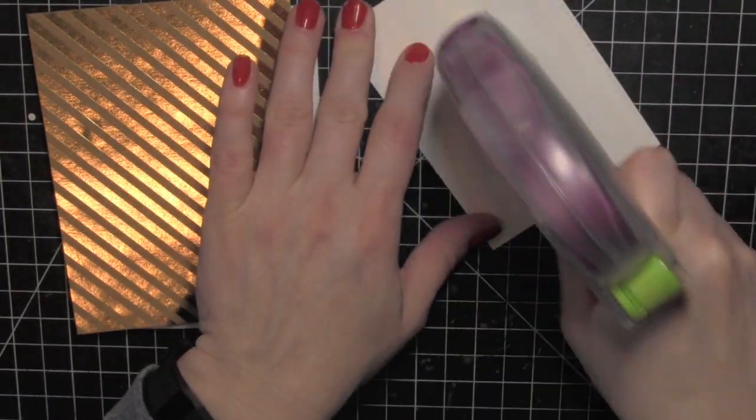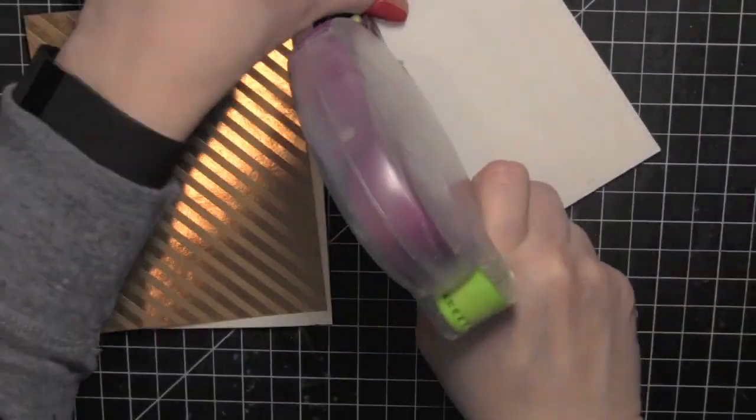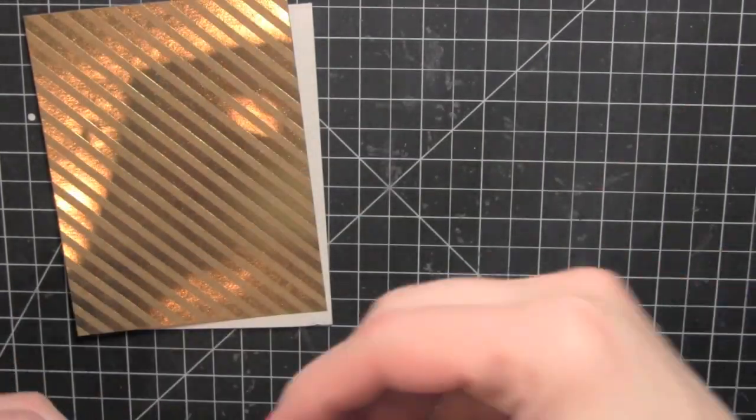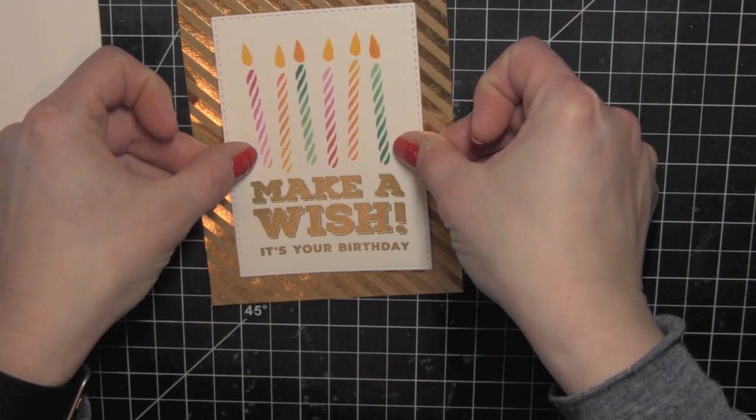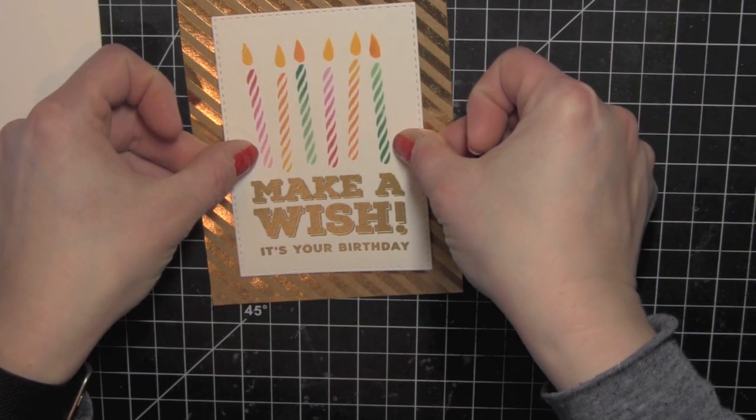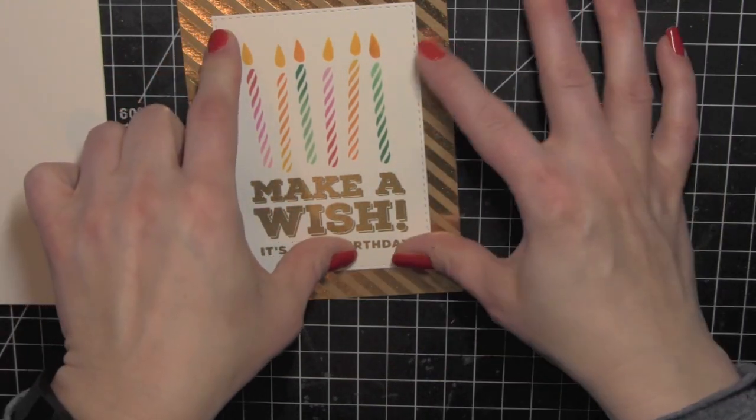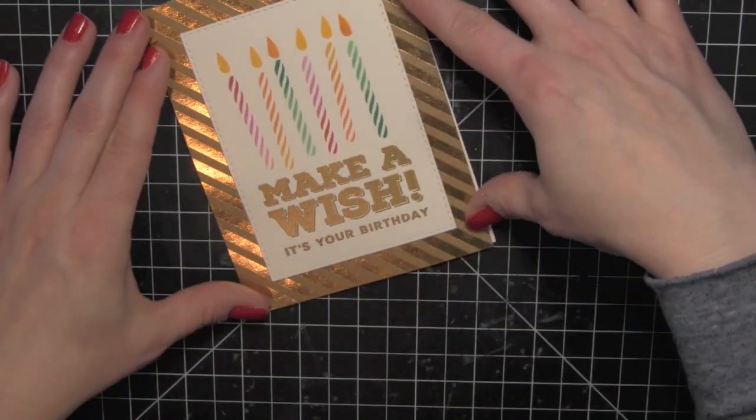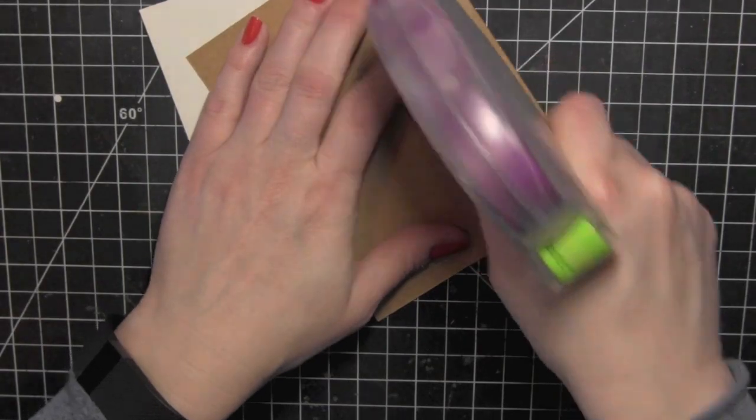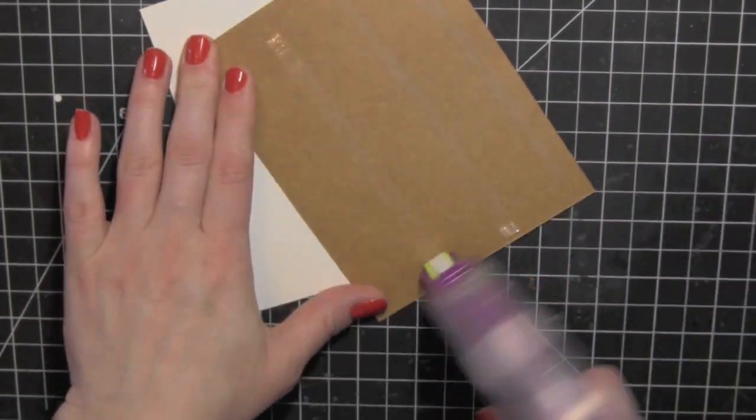I'm going to place some adhesive on the back of my die cut rectangle. Then I trimmed one of the gold foil papers from the April card kit to an A2 size, so it's five and a half inches tall by four and a quarter inches wide, and adhered my rectangle right in the middle of that.